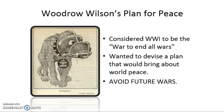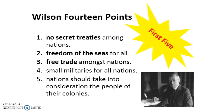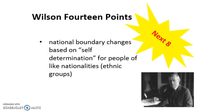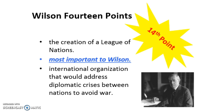Woodrow Wilson's plan for peace was to avoid future wars, and he does this through the creation of his 14 Points. You don't need to know all of them, but the first five are really about freedom of the seas, free trade, and preventing future war — including no secret treaties, since that was one of the causes of World War I. The next eight are all about self-determination of ethnic groups. And the 14th point, the most important one, was advocating for a League of Nations, which would resolve diplomatic crises and avoid war.